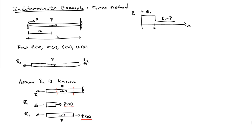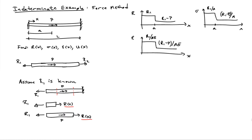Knowing R(x), we can easily determine the stresses by dividing by the cross-sectional area A, and determine the strains by additionally dividing by the Young's modulus E. So stress = R/A and strain = R/(AE). At this point, our answers are expressed in terms of R1, which we don't actually know yet, and we still need to determine U(x), the displacement field.